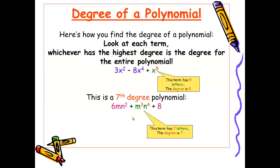To find the degree of a polynomial, first I look at each individual term within the polynomial and find its degree. The term with the highest degree gives us the degree for the entire polynomial. In this first example, 3x² - 8x⁴ + x⁵, my highest degree term is x⁵. So that means this entire polynomial is a fifth degree polynomial. Please do not add exponents from one term to the next. We only add the exponents within a term.